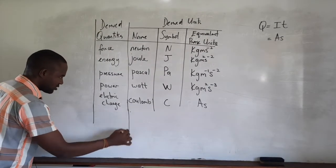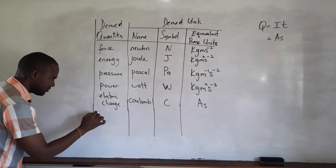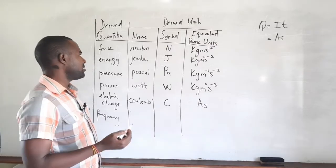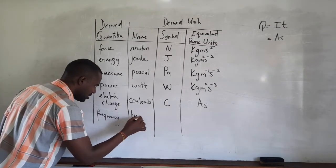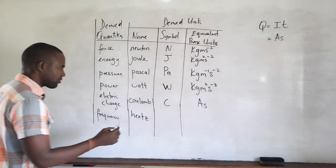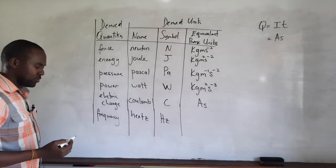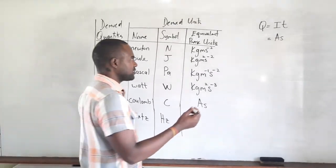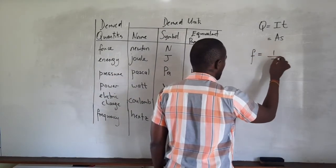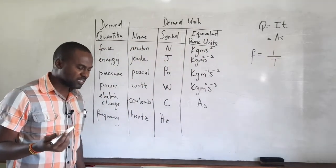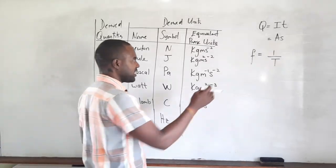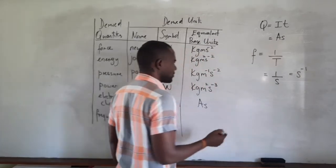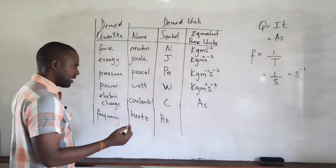Finally, we look at frequency. The SI unit of frequency is the hertz, spelled H-E-R-T-Z, with symbol Hz — uppercase H and Z. Using the defining equation, frequency f equals one over the period T, where the period represents time with SI unit the second. Therefore the SI unit of frequency is the reciprocal of the second, equivalent to s to the minus one — so the hertz equals s⁻¹.